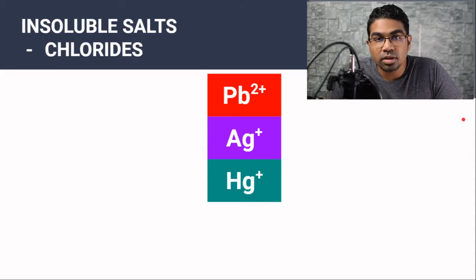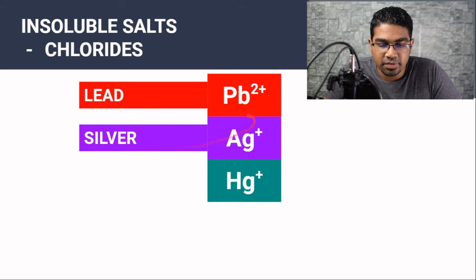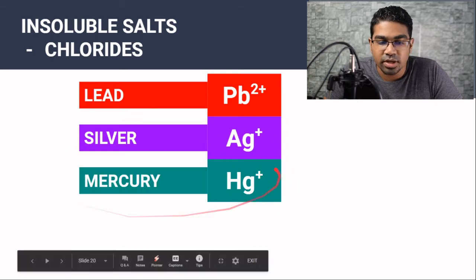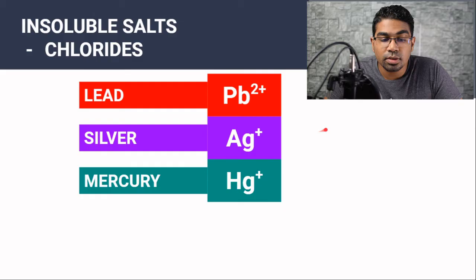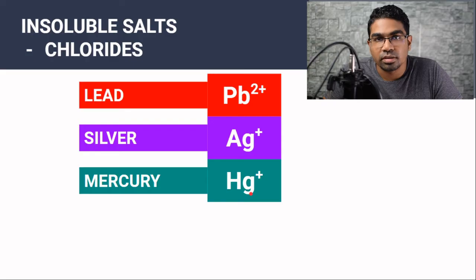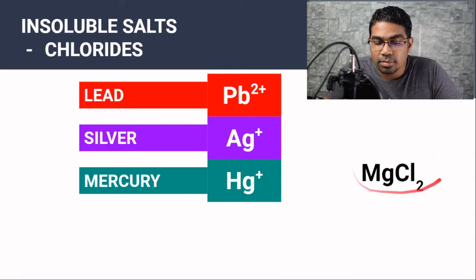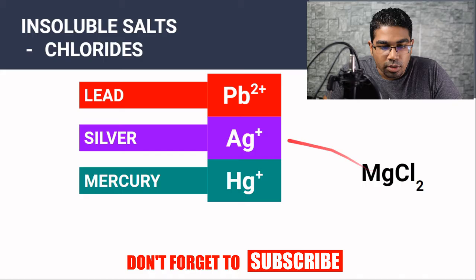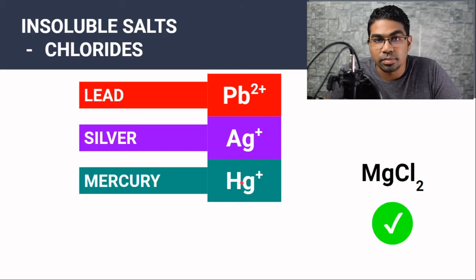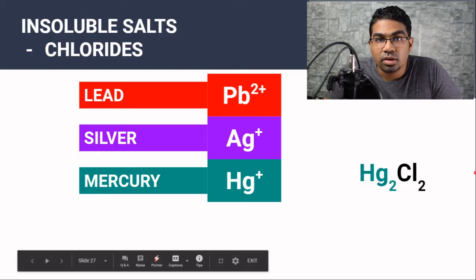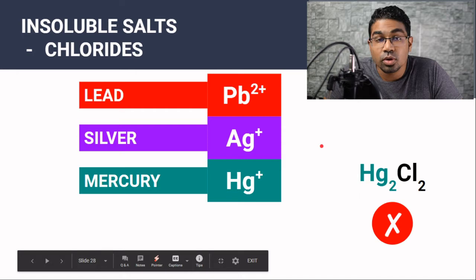For insoluble chlorides, we remember PAH. Pb is lead, Ag is silver, and Hg is mercury. For chloride, as long as the cation is either lead, silver, or mercury, the chloride will be an insoluble chloride. For example, lead chloride — Pb is part of PAH and therefore it is insoluble. Magnesium chloride: magnesium is not part of PAH and therefore it will be soluble. Silver chloride is part of PAH — it will be insoluble. Mercury chloride is part of PAH — it is also insoluble.